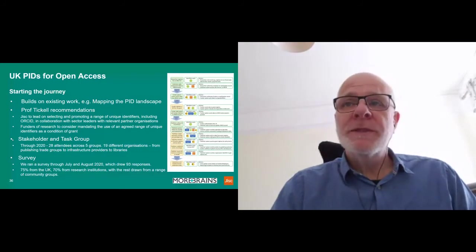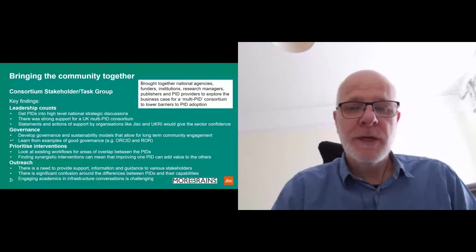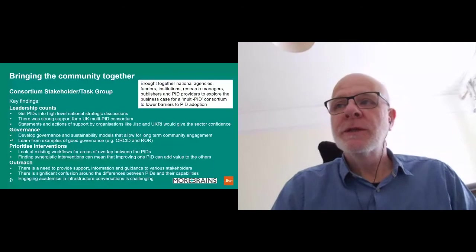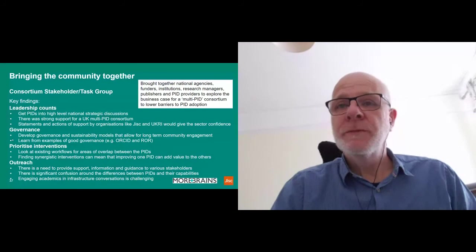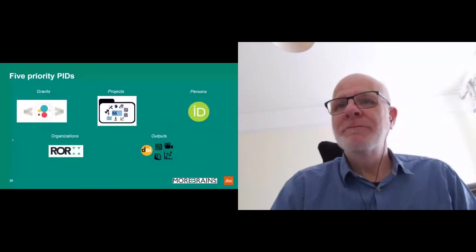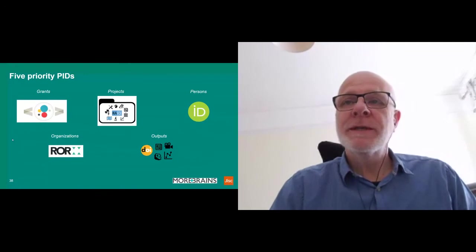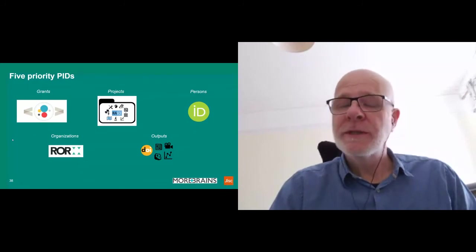A good lot of this work is working with the community — it's not just JISC-led. It's a JISC initiative from the Tickerwood recommendations, but working with the community. It's bringing together national agencies, funders, institutions, research managers, publishers — who provide a basis for a multiple PID consortium, particularly to lower the barriers for PID adoption. There's strong support for the consortium. It needs to look at governance and sustainability models to allow for long-term community engagement, prioritize interventions, and also provide support for outreach activities. Out of that came the five priority PIDs: grants identifiers from Crossref, DOIs, RAID (research activity identifier) for projects, ORCID for people, Research Organisation Registry for organisations, and DOIs from Crossref and DataCite for outputs.